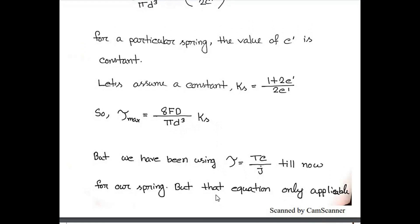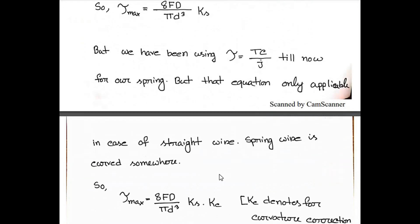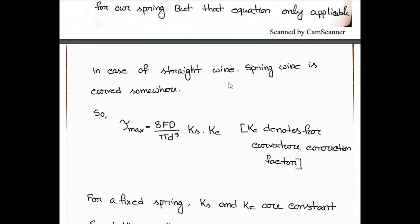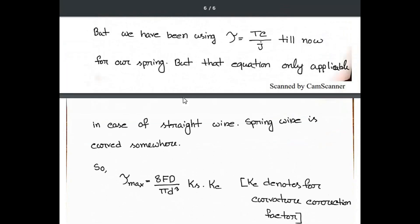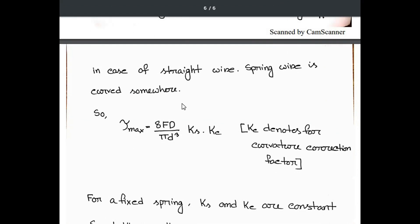We've been using tau equal to TC by J for our spring, but that equation is only applicable for straight wire. In our spring, the spring wire is curved somewhere, so we have to take under consideration the curvature. We're putting k_c which denotes the curvature correction factor, and we multiply this k_c with the tau max we calculated earlier.